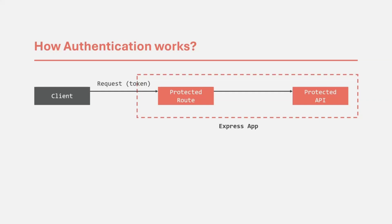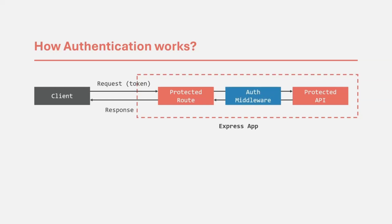If this token is valid, then the protected API will return the response. But if the token is not valid, then the request should not reach the protected route. To make sure that the request coming from an unauthenticated user does not reach the protected API, we are going to create an authorization middleware. From this auth middleware, if the token is not valid, we are going to return an error response.